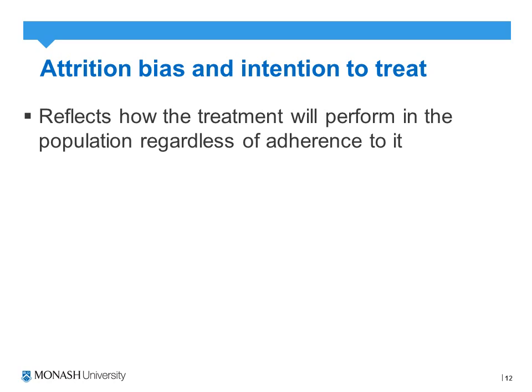The third bias is attrition bias, along with the notion of intention-to-treat analysis. Attrition bias, as the name suggests, identifies whether patients dropped out of the study. We can overcome this by identifying if and why patients dropped out, as well as performing an intention-to-treat analysis.